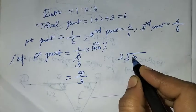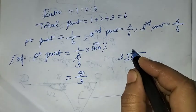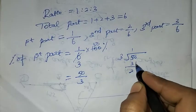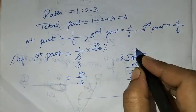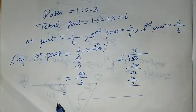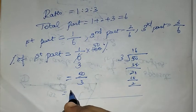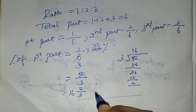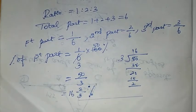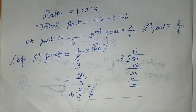50 divided by 3: 3 times 6 is 18, balance is 2. Quotient is 16, remainder is 2, divisor is 3. So it's 16 and 2 by 3 percentage.